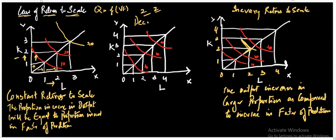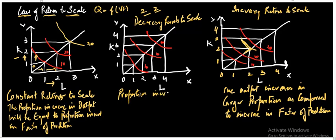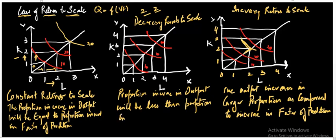However, there are cases where efficiency may decrease as well, and this results in decreasing returns to scale. In this case, the proportionate increase in output will be less than the proportionate increase in factors of production. This is a scenario where introducing some factors of production results in lower additional production.